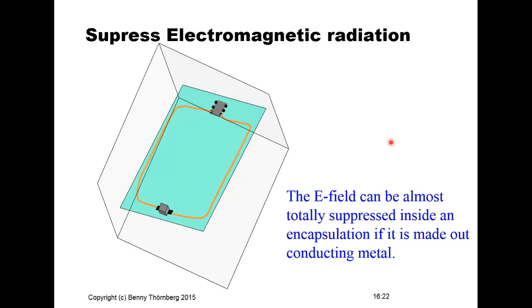To suppress electromagnetic radiation on a circuit board, encapsulating it in a conducting metal box almost completely suppresses the electrical field vector. This is why sensitive electronic equipment is often housed in metal enclosures.